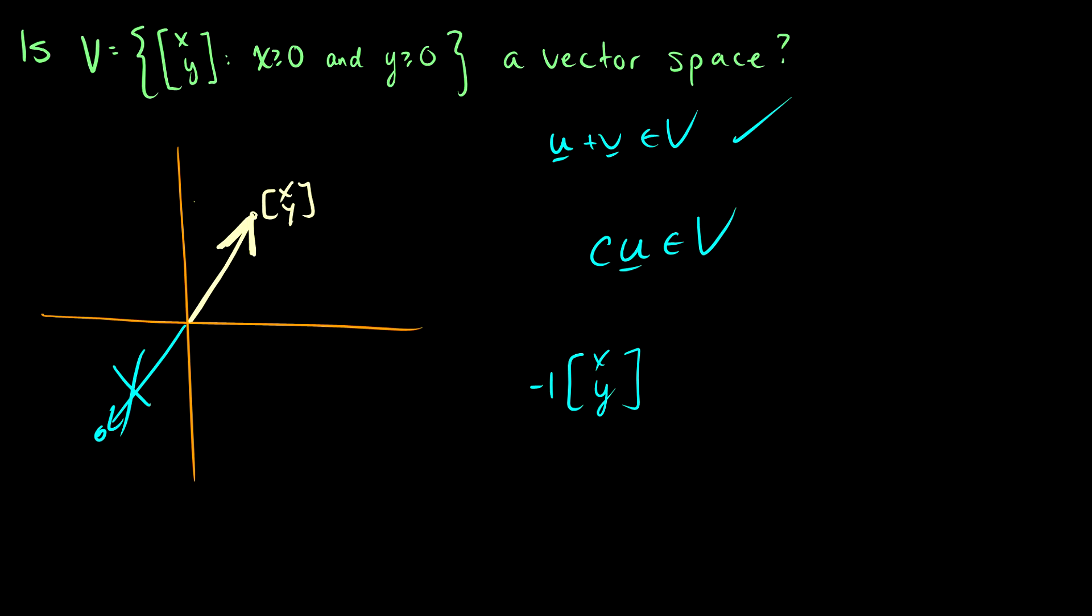Our vector spaces have to be closed under addition and multiplication, which means we should never be able to leave this area up here. But if we multiply by negative one, we can leave our vector space. And that's not good.